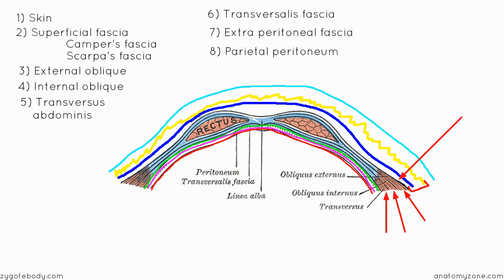So those are the layers of the abdominal wall. Starting from outside in: skin, the superficial fascia consisting of Camper's fatty fascia and Scarpa's membranous fascia, then the three muscles — external oblique, internal oblique, and transversus abdominis — followed by the transversalis fascia immediately below these muscles, then the extraperitoneal fascia, and finally the parietal peritoneum.